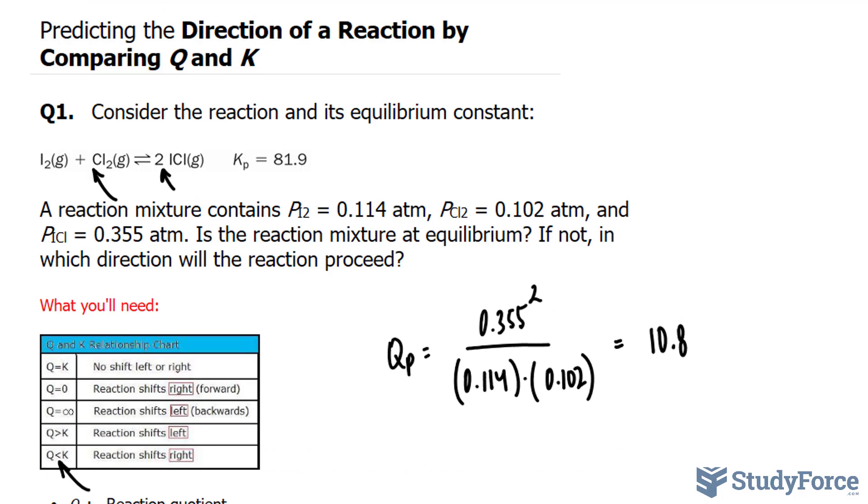And there you have it. Two examples on how to predict the direction of a reaction by comparing Q and K.